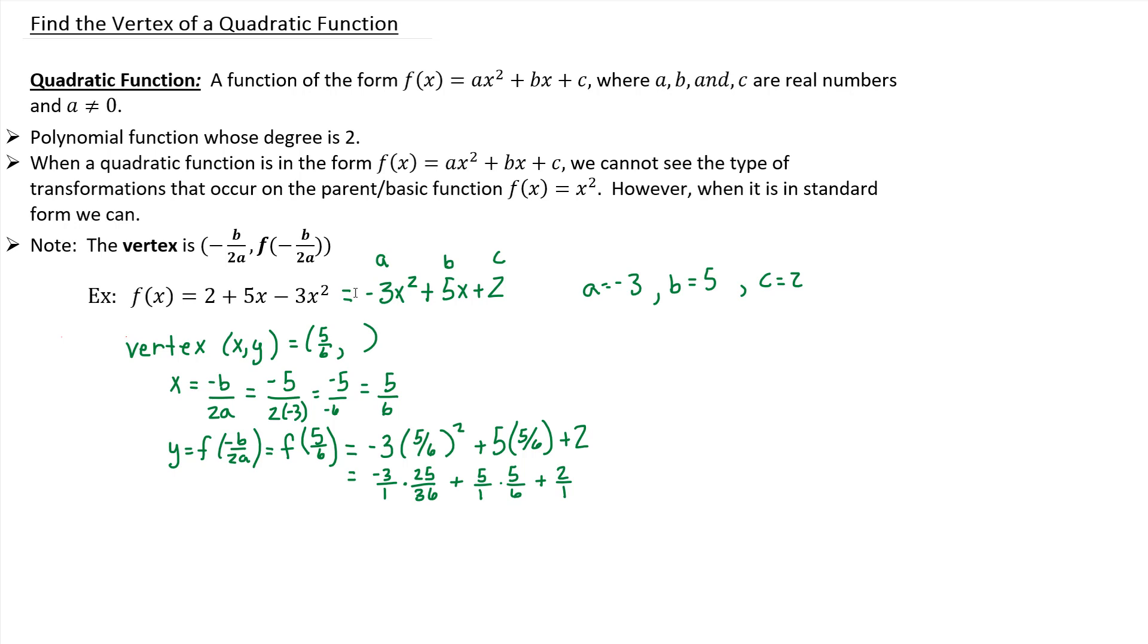So this is negative 75 over 36 plus 25 over 6 plus 2 over 1. The common denominator for 36, 6, and 1 is 36. So I need to rewrite all of my fractions so that they have 36 in the denominator. For the second fraction, I need to multiply by 6 to get a 36.